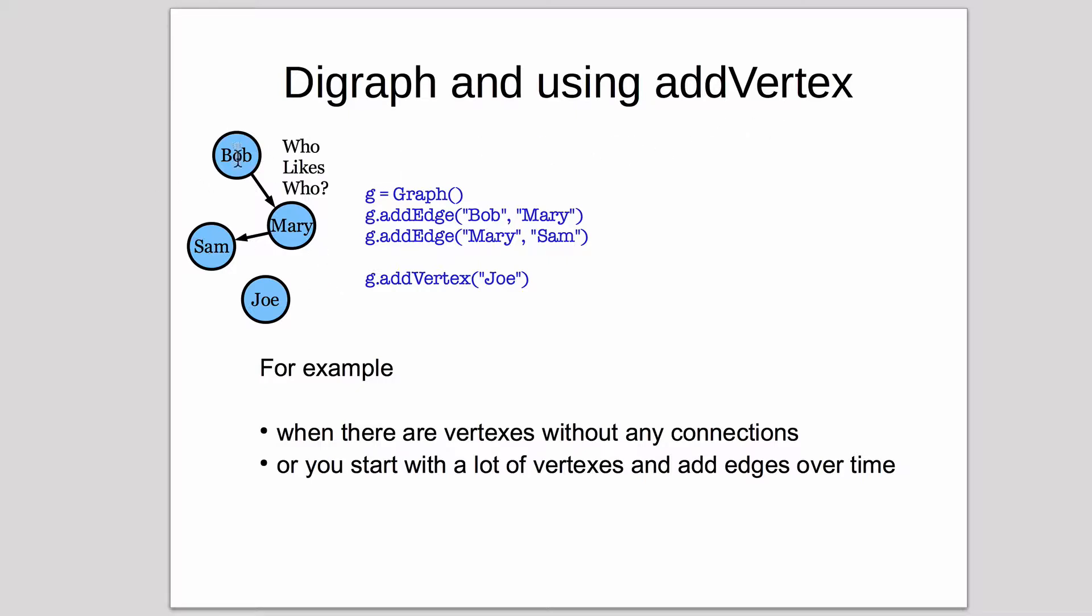Here's the digraph. In a digraph, the edges go in a particular direction. And in that case, you add edge with the from and the to. So Bob likes Mary in this case. Mary likes Sam. And Joe has no relationship or connections. So you can't add an edge to add the vertex Joe. You have to call add vertex by itself.